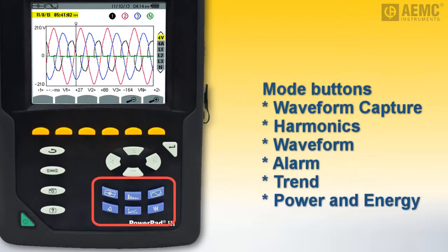Below these are six buttons for selecting the instrument's operational mode. Waveform capture mode enables you to display and capture transients and inrush events. Harmonics mode displays harmonic levels for voltage, current, and apparent power, order by order. Waveform mode displays current and voltage graphs, along with measured values and those calculated from voltages and currents. Alarm mode displays overages of programmable thresholds for a variety of parameters. Trend mode records changes to specified parameters. And power and energy mode displays power and energy measurements. The full use of these buttons is described in detail in the user manual.